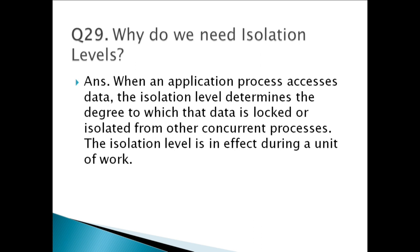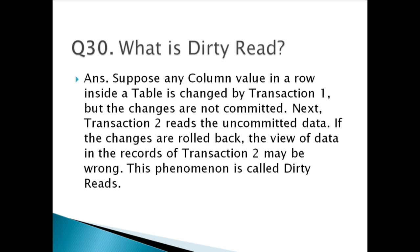Suppose any column value in a row inside a table is changed by transaction 1, but the changes are not committed. Next, transaction 2 reads the uncommitted data. If the changes are rolled back, the view of data in the records of transaction 2 may be wrong — the value of data in transaction 2 will be incorrect.